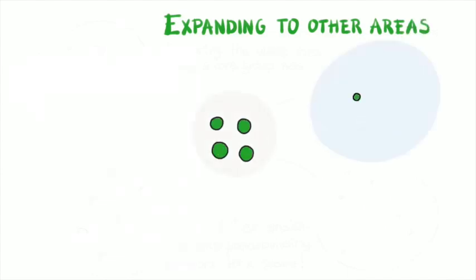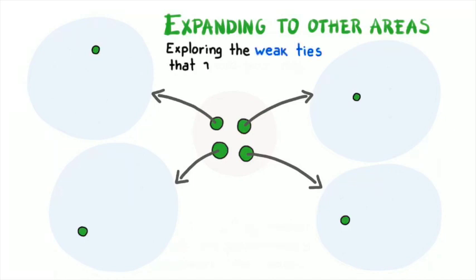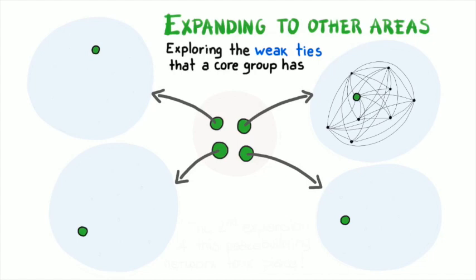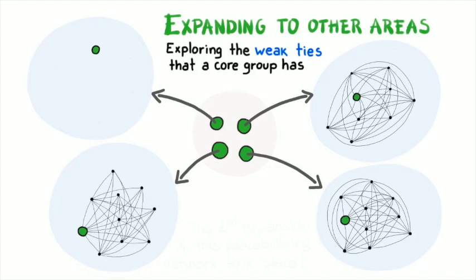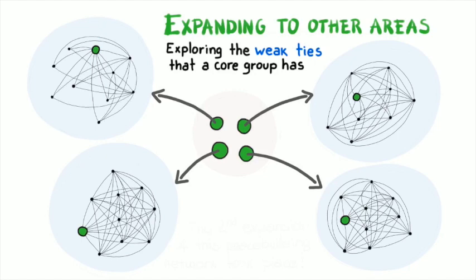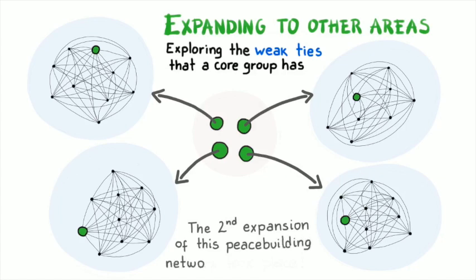The clashes in the market were a mere reflection of a broader problem that involved other stakeholders. One way to do this was for each woman to go back to their clans and personally engage the elders. This reveals the concept of exploring the weak ties that a core group has. Every member of the core group had her own connections to other social network clusters. By exploring and engaging these connections, the second big expansion of this peacekeeping network took place.